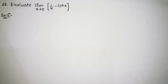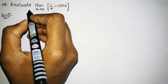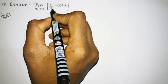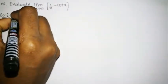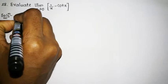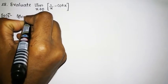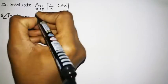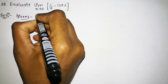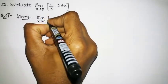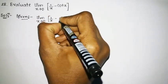Hello friends, welcome to Insight Learners. Today we shall discuss the next problem: the limit as x tends to 0 of 1 divided by x minus cot x.